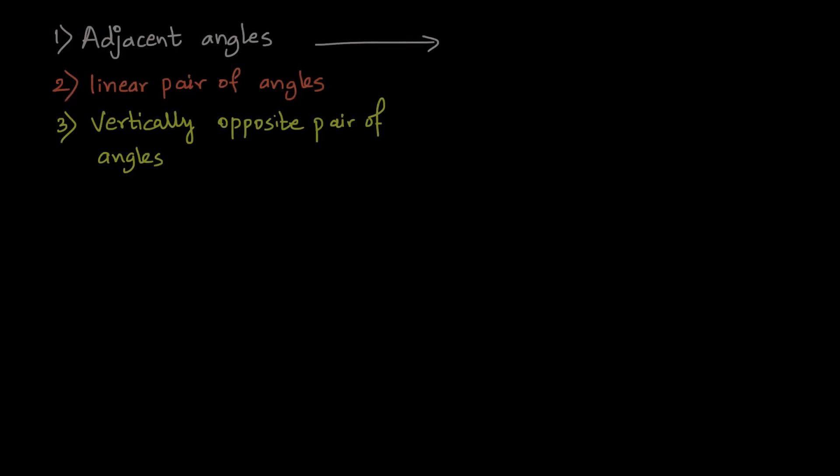We want to see what are adjacent angles, linear pair of angles, and vertically opposite angles. So first we will look at adjacent angles.